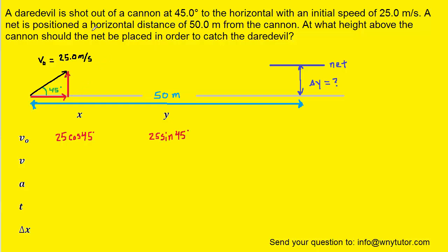Now the question notes that the net is a horizontal distance of 50 meters away from the cannon, so we've added a label to the drawing to show those 50 meters. That is the horizontal displacement which means we can plug that in to the x direction of our table. Sticking with the x direction, it turns out that the acceleration is zero, as is almost always the case with projectile motion questions.